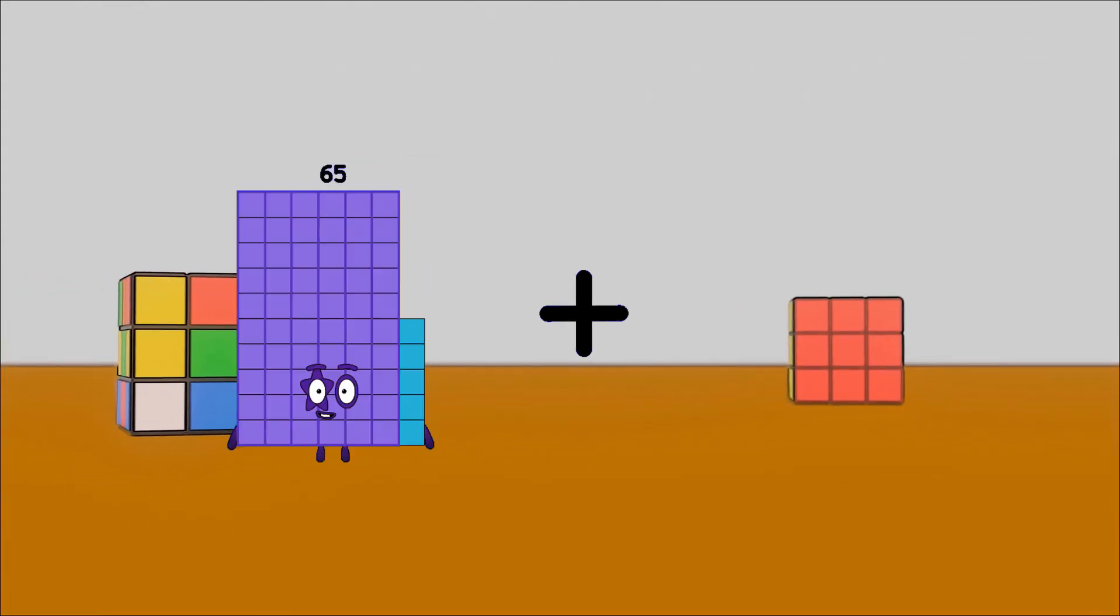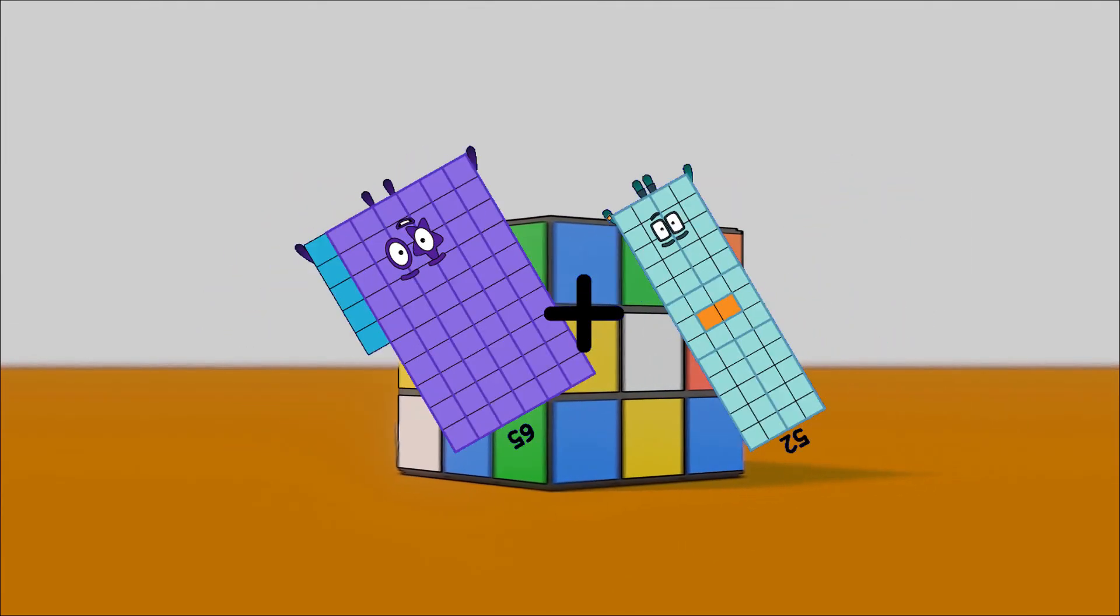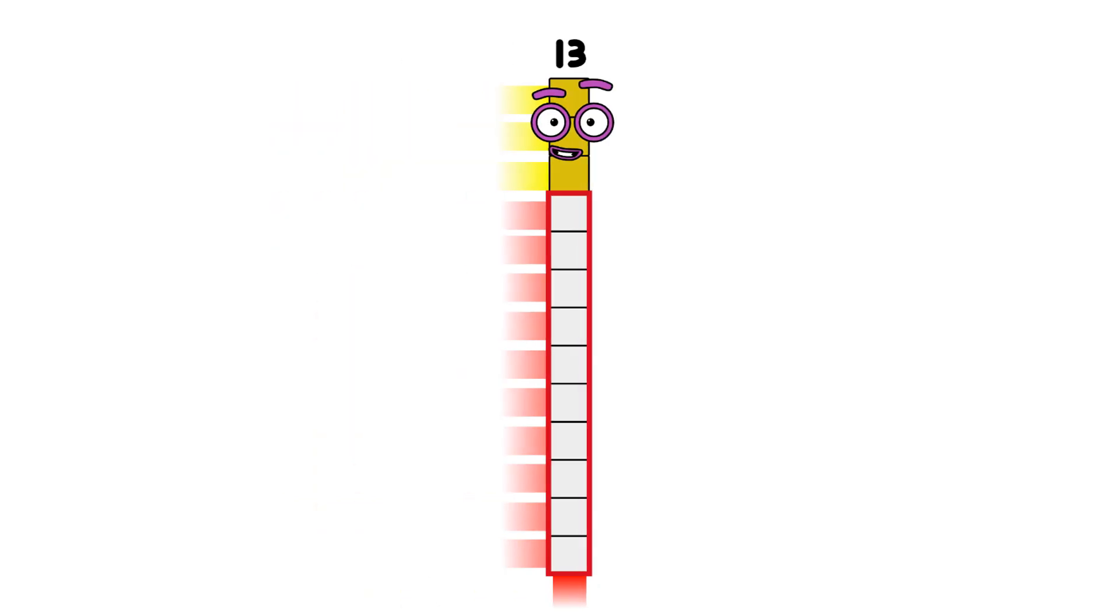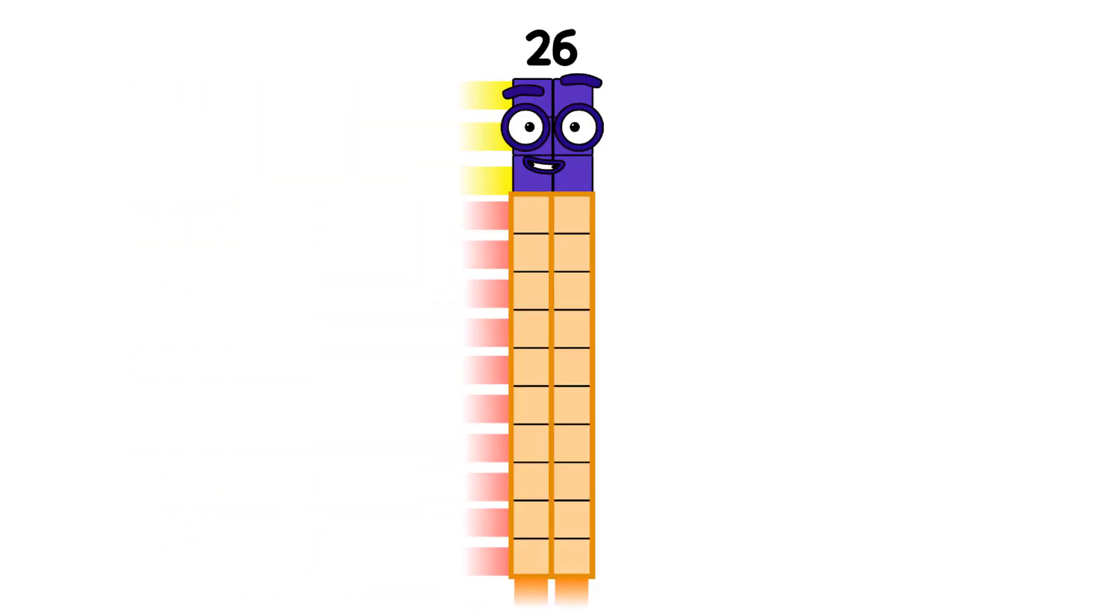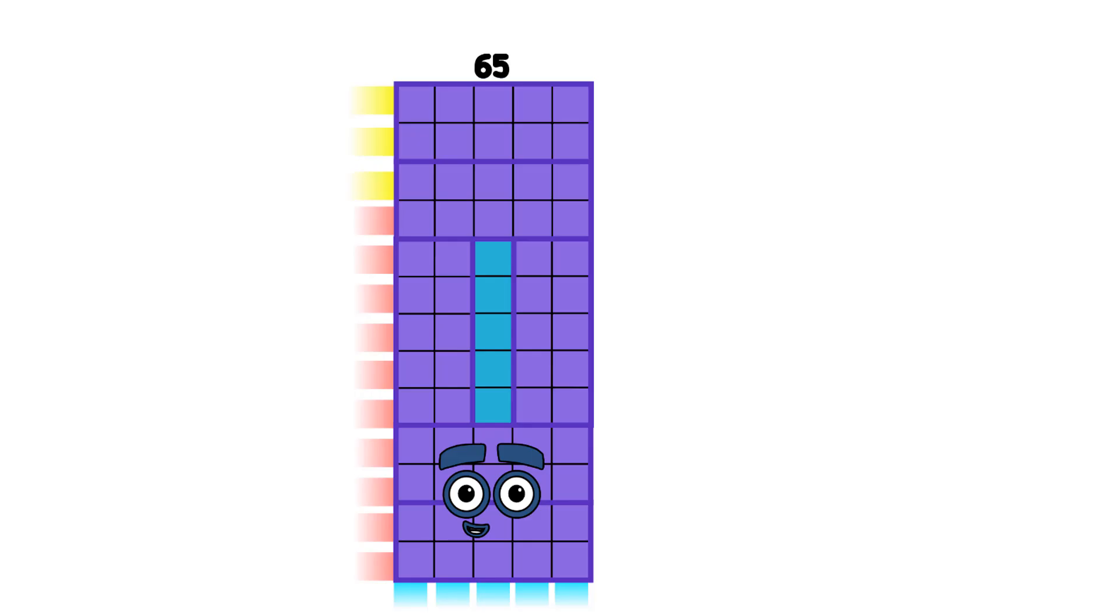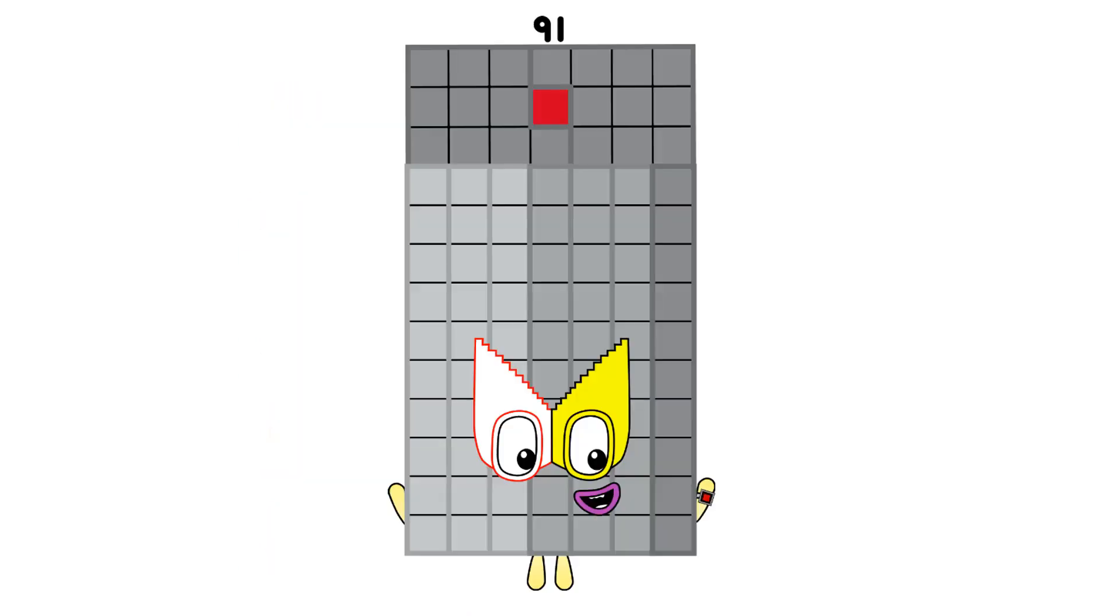65 plus 52 equals 117. 16, 13, 26, 39, 52, 55, 78, 91.